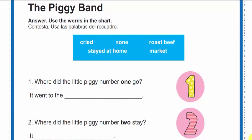Let's continue with activity number 13: The Piggy Band. Answer using the words in the chart. Vamos a responder usando las palabras en el recuadro. Y las palabras son: cry, none, roast beef, stayed at home, market.